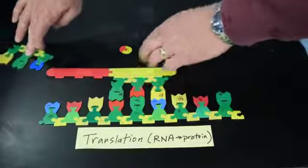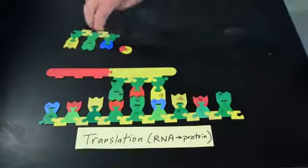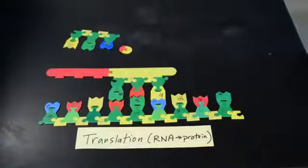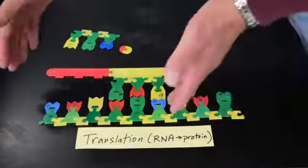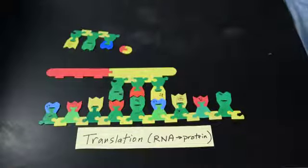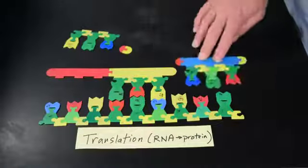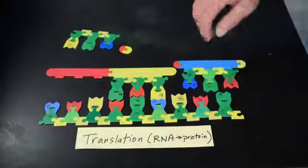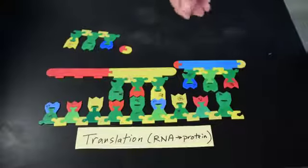So this tRNA will go floating off and be recycled. It'll go get another load. In this case another red amino acid. At this point the ribosome will move down and that allows the next tRNA to come in. Again, the tRNA that comes in will have an anticodon complementary to the codon.